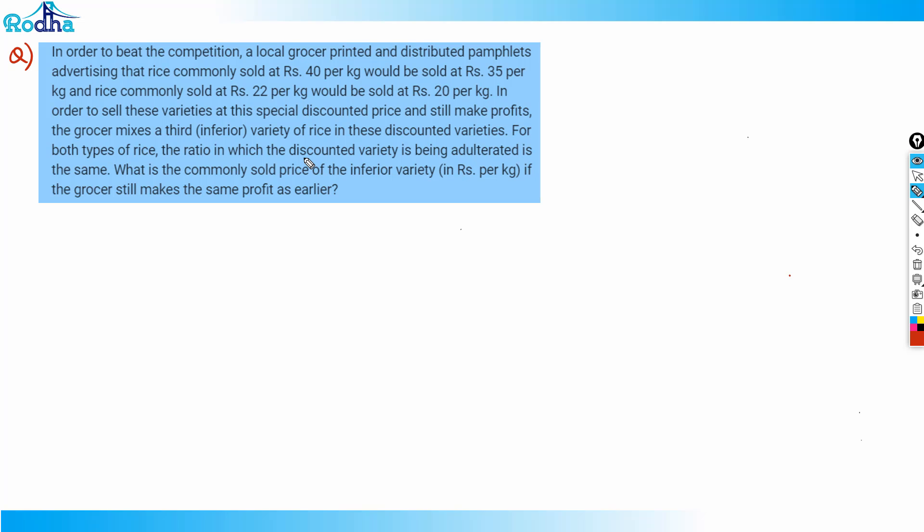In order to sell these varieties at this special discounted price and still make profits, the grocer mixes a third inferior variety of rice in these discounted varieties. That's a pretty general case we can think of. So for both types of rice, the ratio in which the discounted variety is being adulterated is the same.